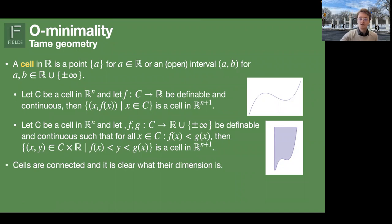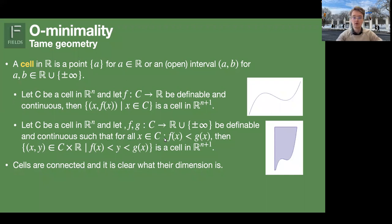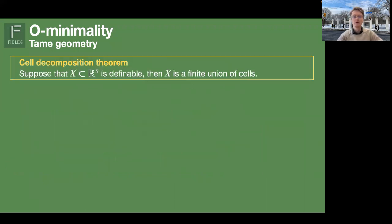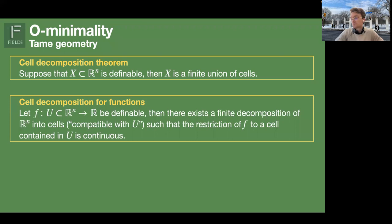Every time you take the graph of a function you do not increase your dimension, and if you take the region between two graphs you increase it by one. These are the building blocks of O-minimality because of the cell decomposition theorem: every definable set is a finite union of cells. In arithmetic and computational algebraic geometry, this is analogous to the cylindrical decomposition of algebraic sets, but here it works for an abstract class of functions and sets.